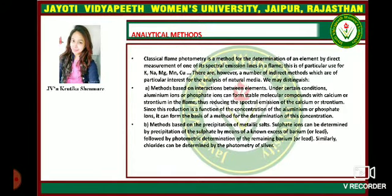Analytical methods: classic flame photometry is a method for the determination of elements by direct measurement of one of its spectral emission lines in a flame. This is of particular use for sodium, potassium, magnesium, manganese, and copper. There are, however, a number of indirect methods which are used for particular interest in analysis.